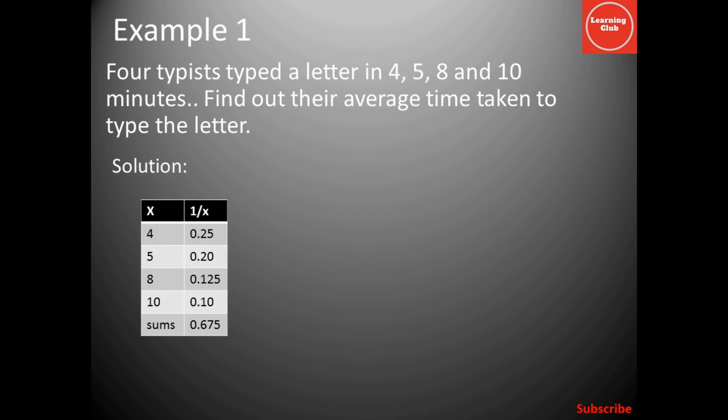According to the definition, first column, you can see that we have our x values 4, 5, 8, and 10. In our second column, we have to reciprocal these values of x. So, 1 over 4 equals 0.25, 1 over 5 equals 0.20, 1 over 8 equals 0.125, 1 over 10 equals 0.10. The sum of second column is 0.675.